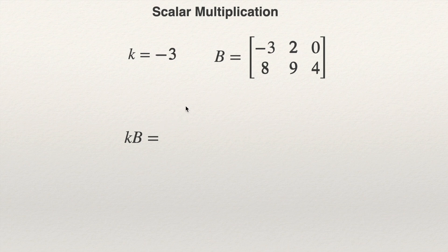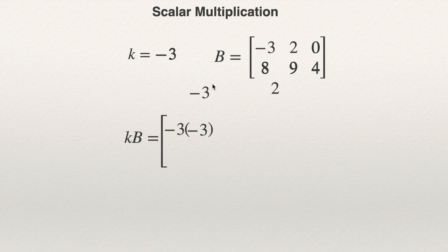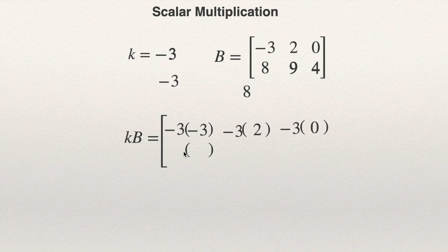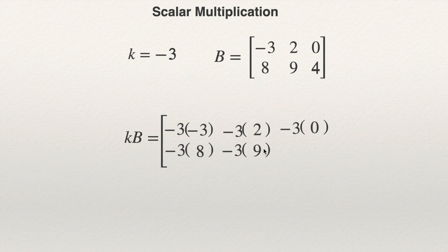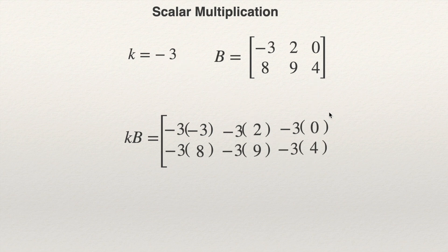So I will be multiplying minus 3 times minus 3, minus 3 times 2, minus 3 times 0, and minus 3 times 8. Any time I make the operation, the answer will be in the same position as the number. For example, when I multiply by 9, the answer will be in the same position as that 9 — that is, the second row, second column. And this 4, when I multiply minus 3 times 4, the answer will be in the position of that 4. So minus 3 times 4. And this is the answer.